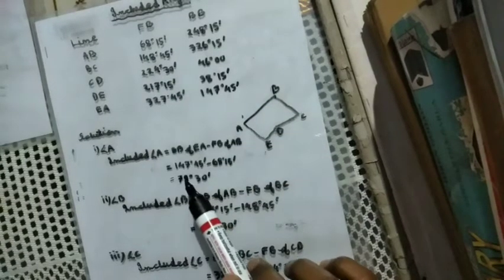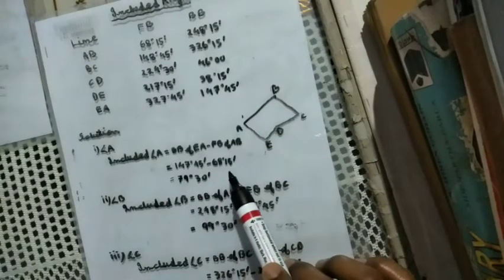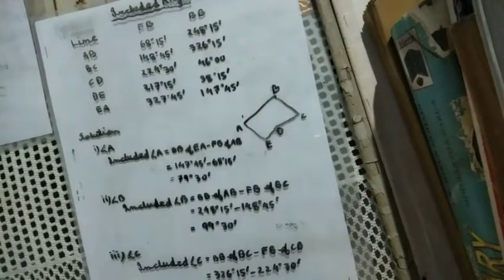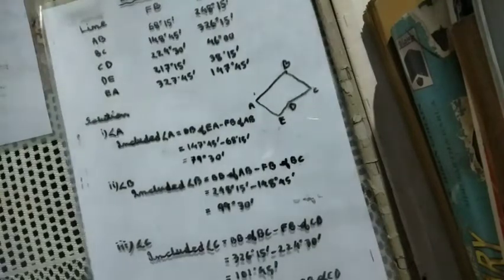I am going to give you 147 minus 68.15, so minus squared I am going to give you 79 degrees 30 minutes.